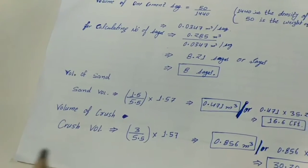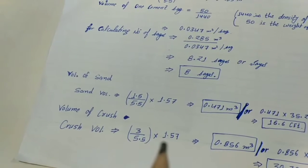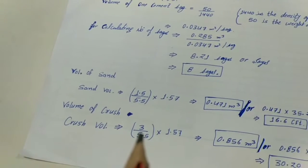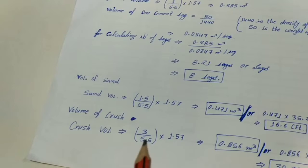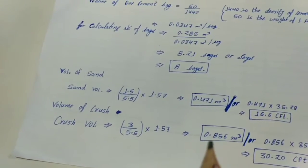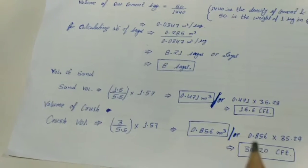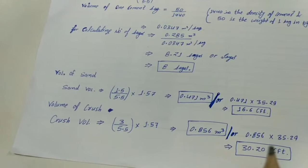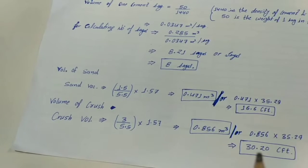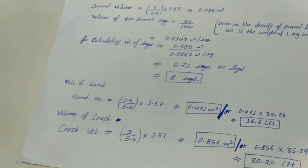Now for the crush volume. Volume of crush = (3 / 5.5) × 1.57, where 3 is taken from the mix ratio, 5.5 is the sum of ratios, and 1.57 is the dry volume. The result is 0.856 cubic metres. Converting to CFT by multiplying by 35.29, the quantity is 30.20 CFT.